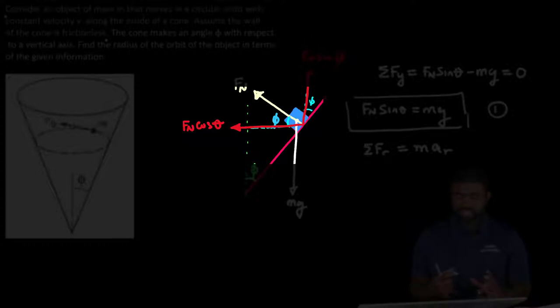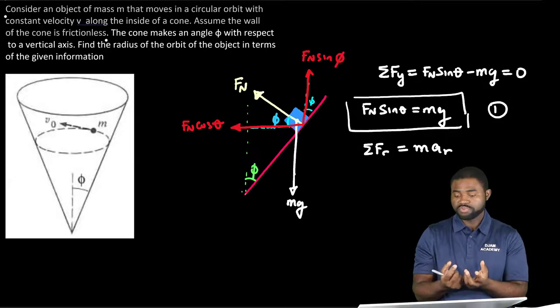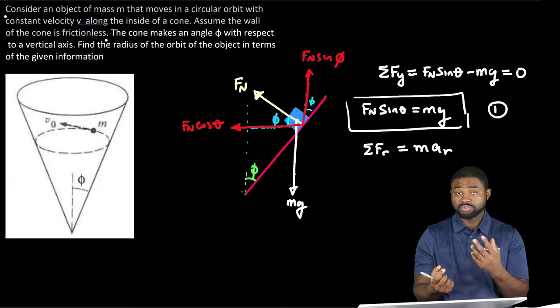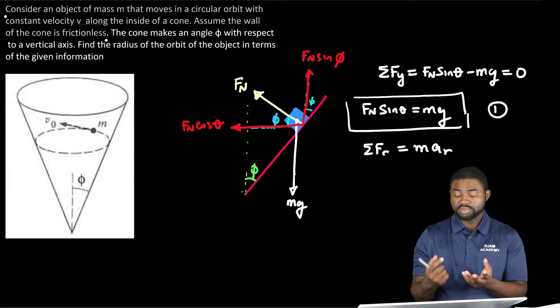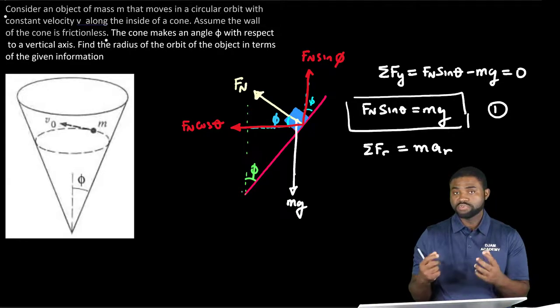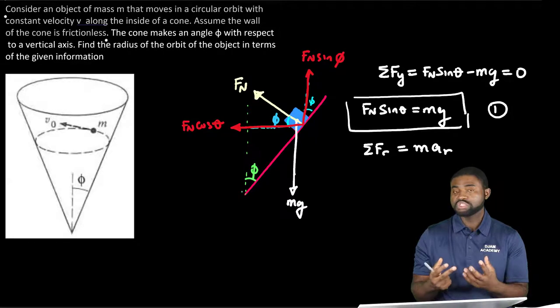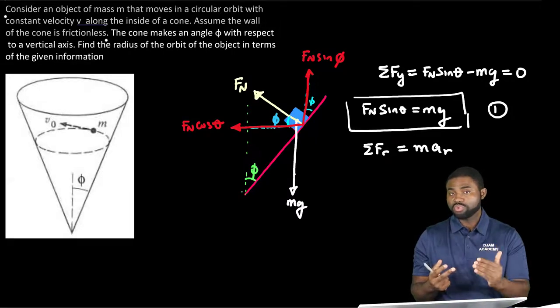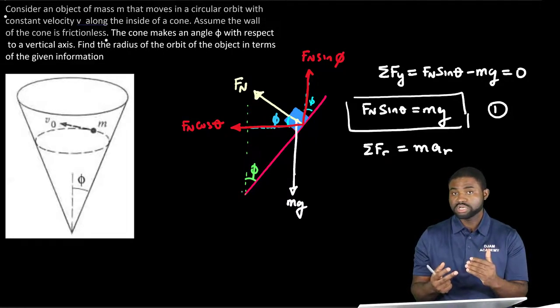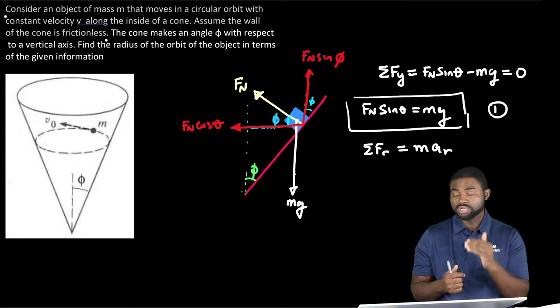If this was a multiple choice question, I will ask that question: what provides the centripetal force? You will have the weight, the normal force, FN cosine theta, FN sine theta. Now I did this before and most students said the normal force. Actually, it is the component of the normal force along the horizontal axis or along the radial direction. It is not strictly the normal force. Keep that in mind.